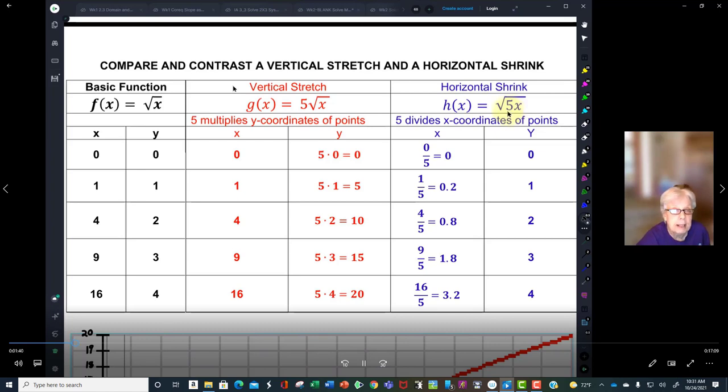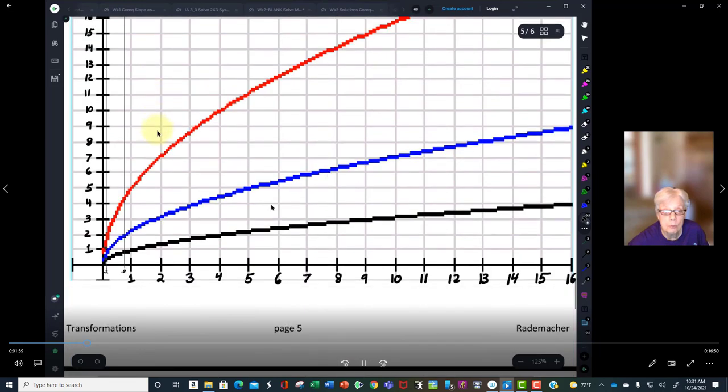First, here are 1, 2, 3, 4, 5 points, easy points, on the graph of f of x equals the square root of x, which is our basic graph. It is in black, right here.